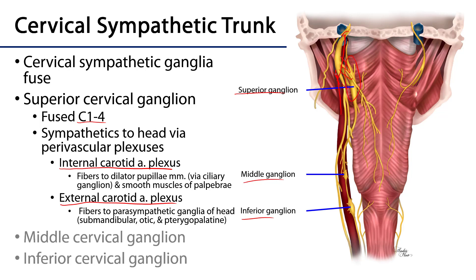The internal carotid plexus sends fibers to the dilator pupillae muscles of the eye via the ciliary ganglion, causing the pupils to dilate. It also sends fibers to the smooth muscle of levator palpebrae superioris to keep the eyelids open during a sympathetic response. The external carotid plexus sends fibers to other parasympathetic ganglia of the head — namely the submandibular and otic ganglia, which innervate the salivary glands, and the pterygopalatine ganglion, which innervates the lacrimal gland and the mucosa of the nose.